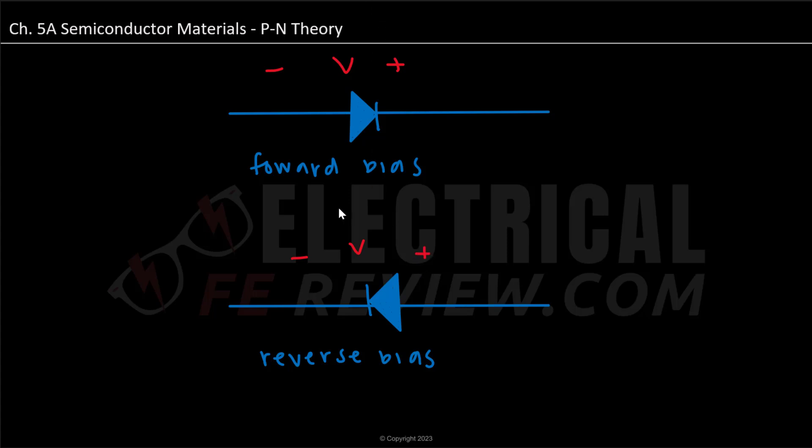And so we can relate this to the PN theory, where if we have our P semiconductor on the left-hand side, which is positive, it is being combined with our negative voltage.